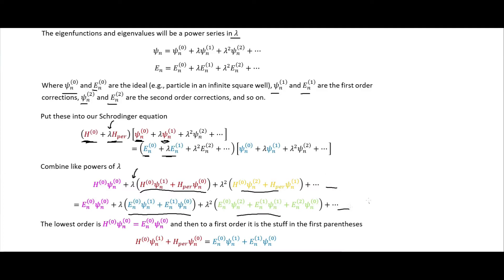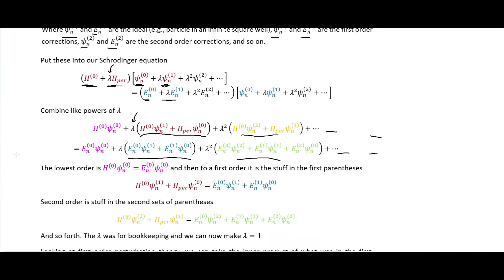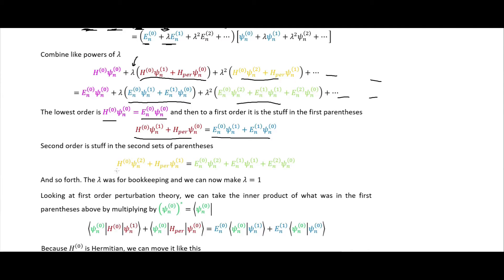The lowest order, shown in bright magenta, is just the ideal wave function equation. The first order is the terms in dark red and dark blue. The second order is shown in orange, then olive green, and so on. We're using lambda just for bookkeeping to collect the correct terms — once we've done that, we can set lambda equal to one.